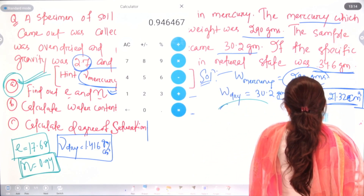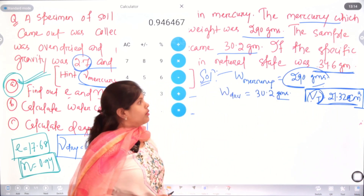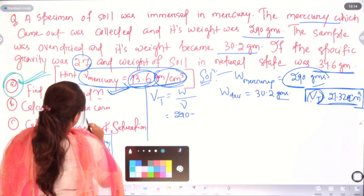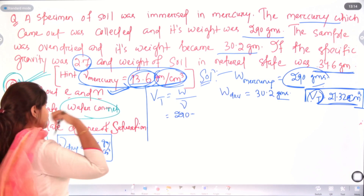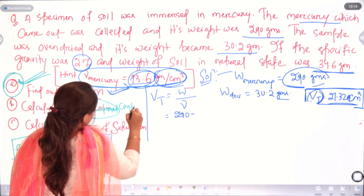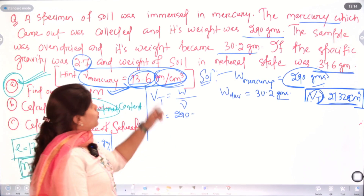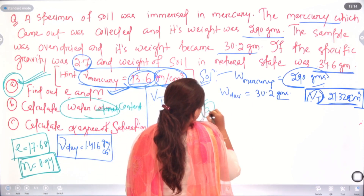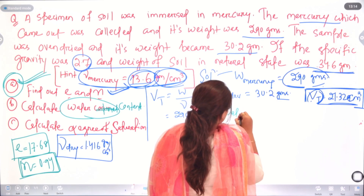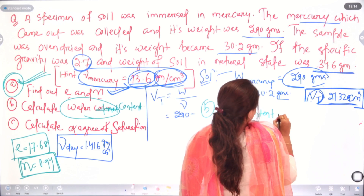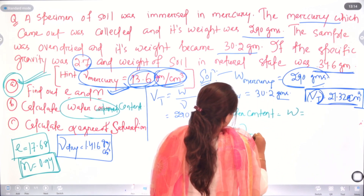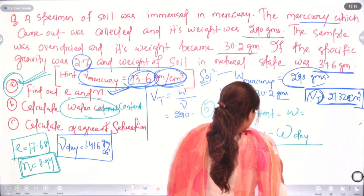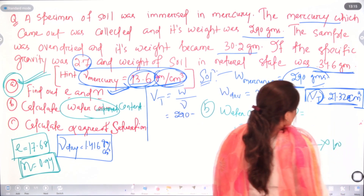Now the question asks us to find out the water content of soil. To calculate water content, we use the formula: w = (W_moist − W_dry) / W_dry × 100. The numerator gives us the weight of water present in the soil, and dividing by the dry weight gives the water content.